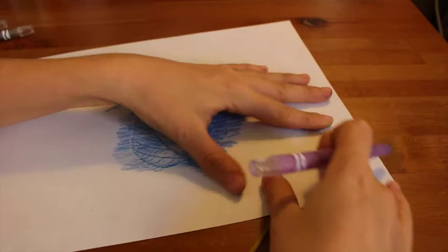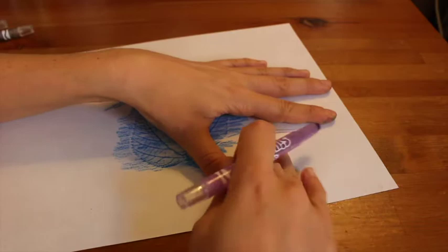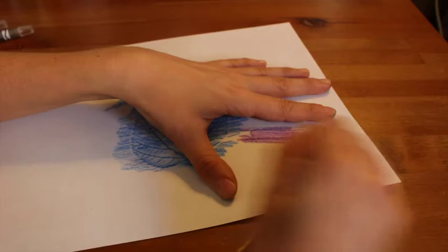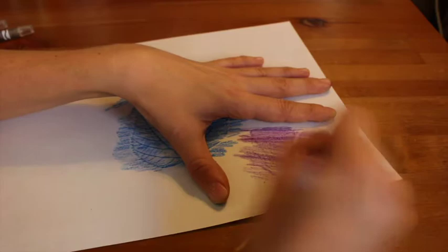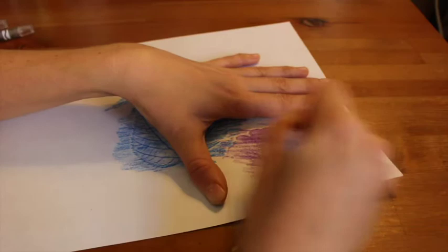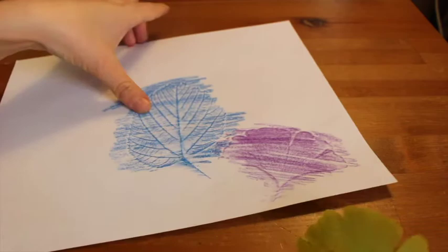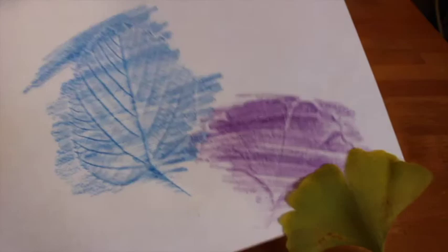I'm holding my paper down with my non-dominant hand and coloring with my dominant hand. Because I'm right-handed, I'm coloring with that right hand. You can see I didn't press hard enough on one of those areas, so I'm going back in without moving my paper. And there you go. There is my second leaf rubbing from the ginkgo biloba leaf.